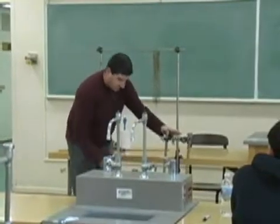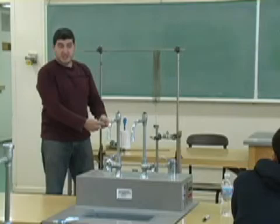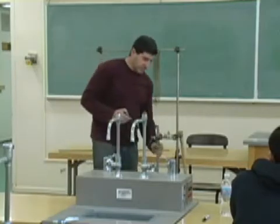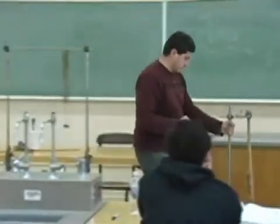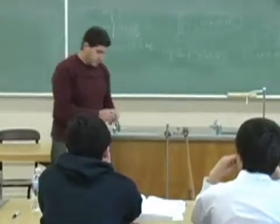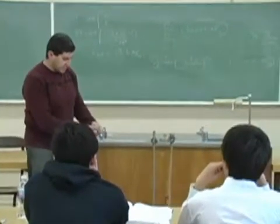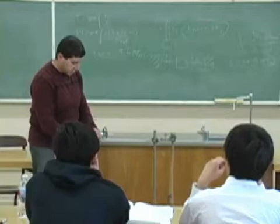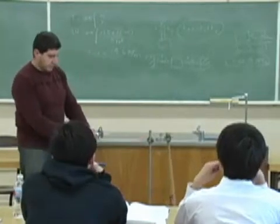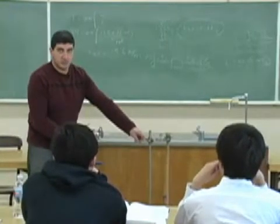So notice here we have a sphere who does have size, which does have size. The sphere does have size but its size is negligible compared to the distance between its center and the pivot point. This is much bigger, okay?